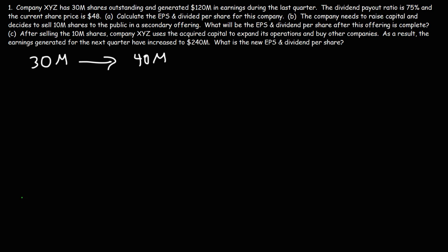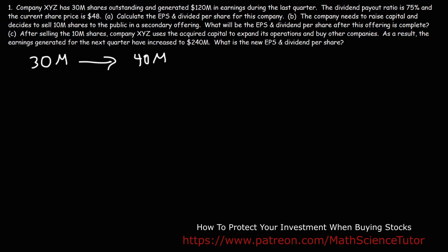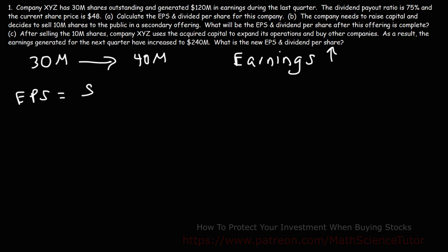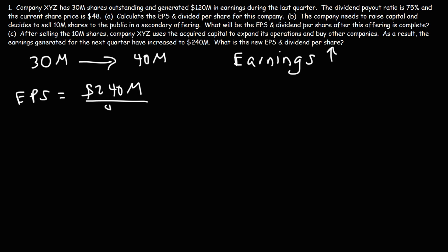Now let's move on to Part C. This time the company makes effective use of the capital acquired from selling the 10 million shares. After selling those 10 million shares, company XYZ uses the acquired capital to expand its operations and buy other companies. As a result, earnings for the next quarter have increased to $240 million. The new EPS will be $240 million divided by 40 million shares outstanding — 24 divided by 4 is 6 — so the EPS went up from $4 to $6 relative to Part A.